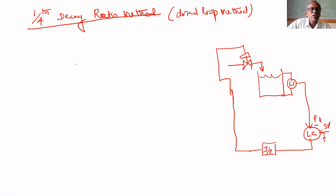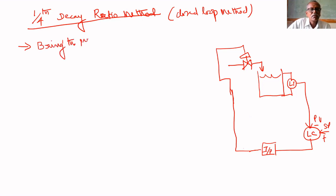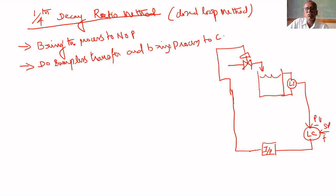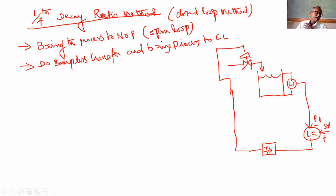You put the process in closed loop. The first step is to bring the process to the nominal operating point in open loop. Then do a bump transfer to bring the process from open loop to closed loop.